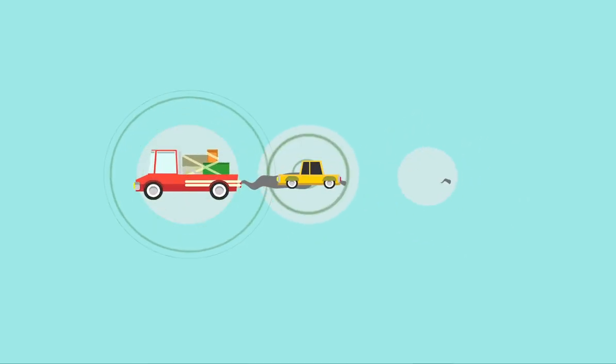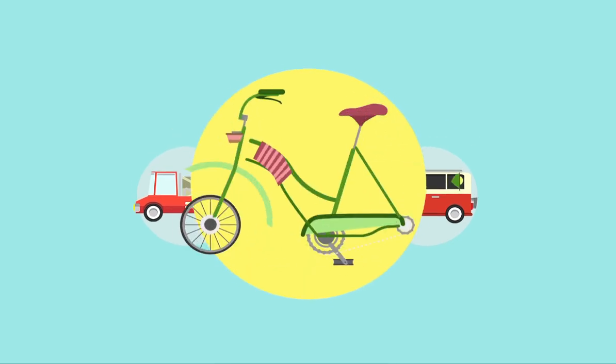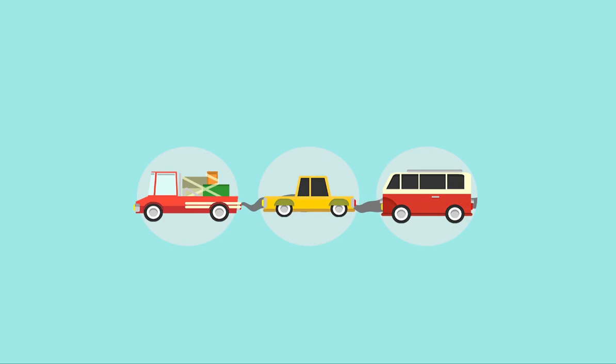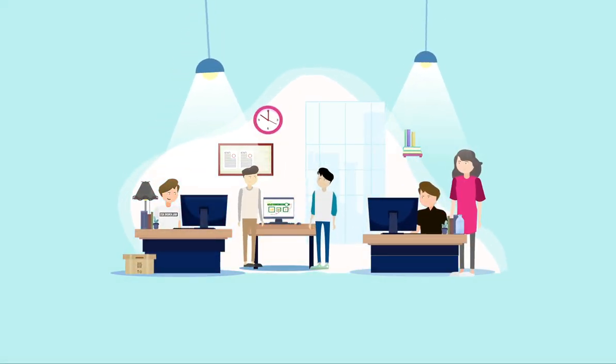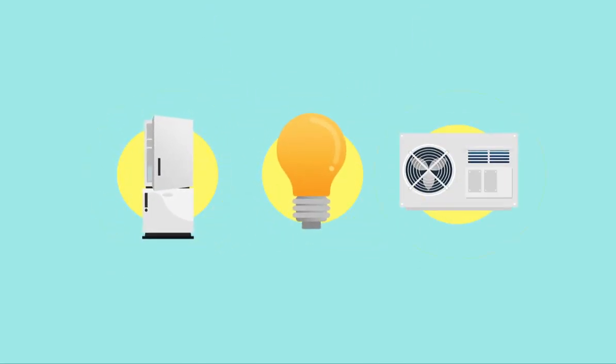To reduce smoke and air pollution, instead of using cars, why not try biking? Reduce your energy consumption. Open our windows and let natural light in. Save energy and save resources, and use energy-efficient appliances.